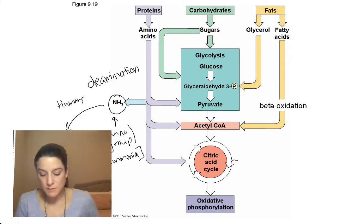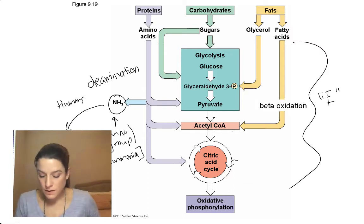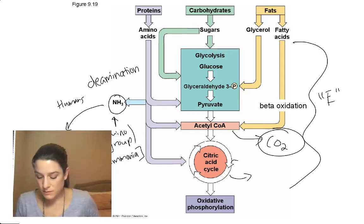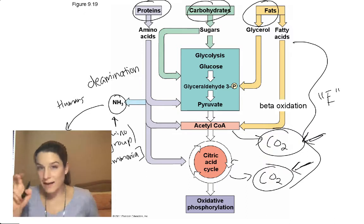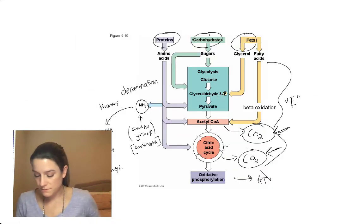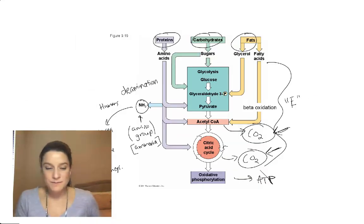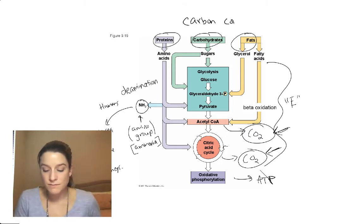The carbon part of proteins can be used for energy. Any food you're using for energy — the carbons go out as CO2 here and there throughout the pathway. So where do all the foods end up that you're using for energy — meaning making ATP? They end up as CO2, and you breathe them out. Whatever you ate this morning is being broken down for energy; you're breathing it out right now as CO2.